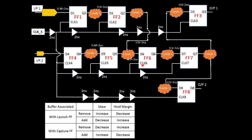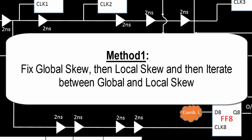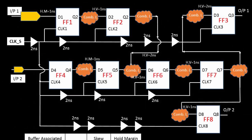I'm going to discuss three ways widely used in the industry — remember every technique has its own pros and cons. In this lecture, we discuss Method 1: work on the global skew first, then on the local skew, then iterate between global and local. Every design has a global skew parameter, and the global skew should remain within that particular range.